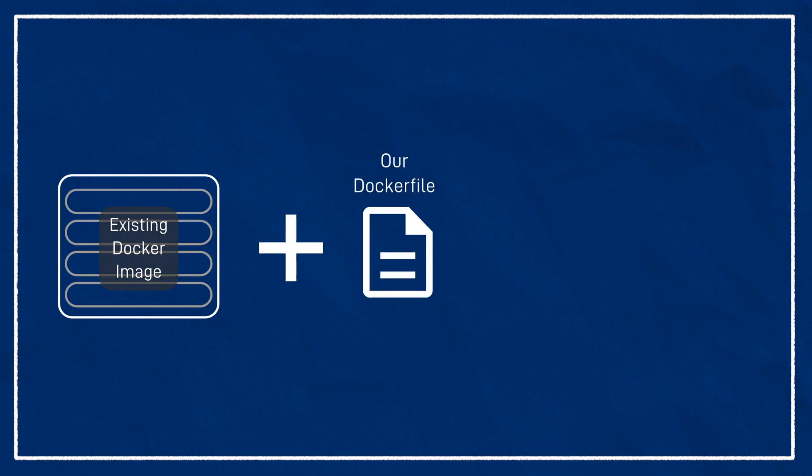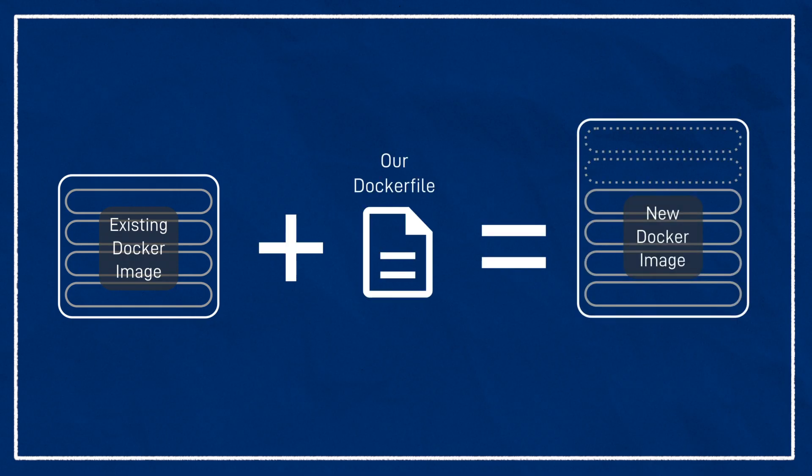We can just treat any given stack of layers as its own image without actually having to know exactly what layers are inside it. By the way, we define what's inside an image using a Dockerfile — you might have heard of them. Our normal workflow is going to be to take an image that was created by someone else, write a Dockerfile to add some extra layers that contain our specific changes, and then use the new image that results. So that's an image. What about a container?